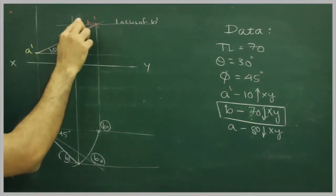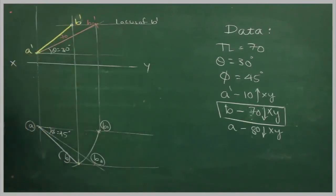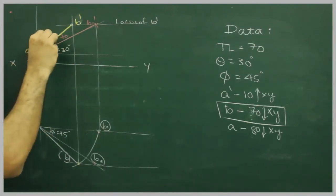Wherever it will cut, that would be b dash. So a dash, b dash will be your front view.